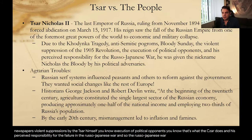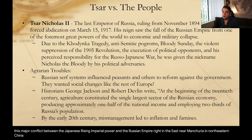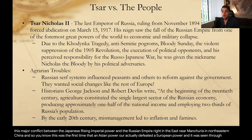The Russo-Japanese War was this major conflict between the Japanese rising imperial power and the Russian Empire near Manchuria in northeastern China. This was the first time that an Asian power actually defeated a European power. It was seen throughout Russia as: the great Tsar Nicholas II led us to defeat, and he didn't teach them a lesson.